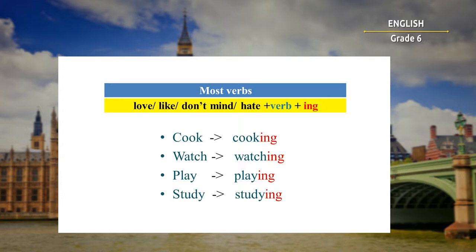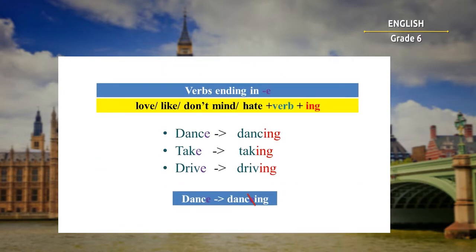This rule applies to most verbs. For example, 'cook' becomes 'cooking,' 'watch' becomes 'watching,' 'play' becomes 'playing,' 'study' becomes 'studying.' But there are situations when we have to remove the last letter 'e' from the verb and then add the -ing ending. This rule is only for verbs with the letter 'e' at the end. For instance, 'dance' becomes 'dancing' — we took away the last letter 'e.'